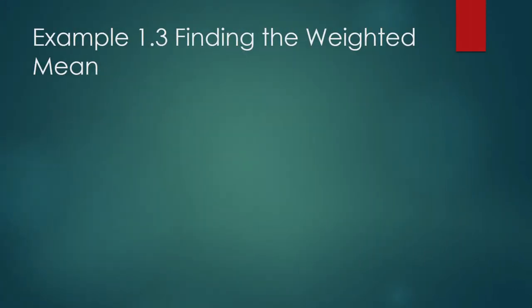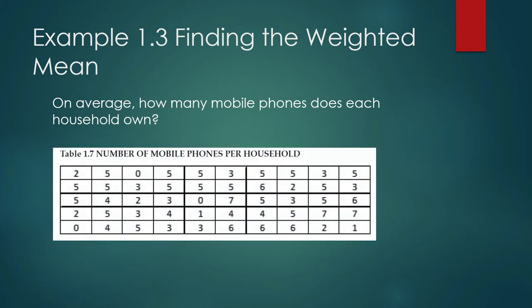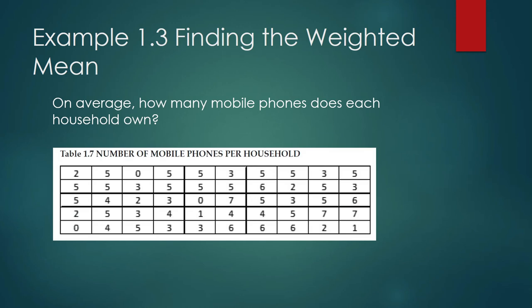We don't have to stop with histogram. We can discover more patterns by finding the weighted mean or the group mean. On average, how many mobile phones does each household own? So we can do it. We can do it in the old way. We can work on the original data. And from there, we can get the average. How do we do that? Well, we get the sum of all these numbers. And then we divide the sum by 50. That is how you get the average.